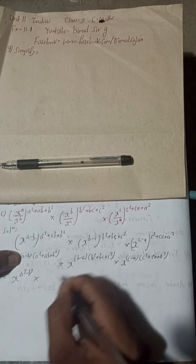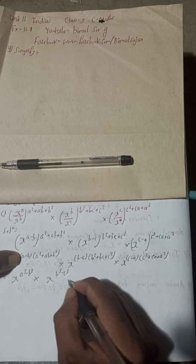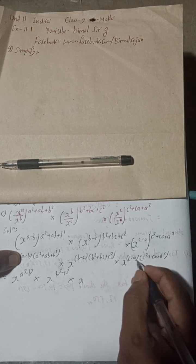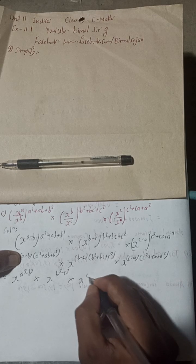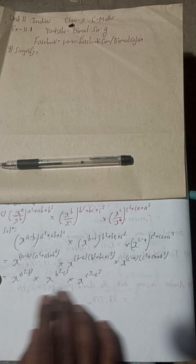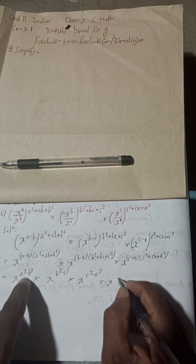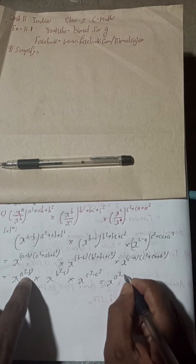Into this is the formula for b³ - c³, into this is the formula for c³ - a³. Now all our x, x, x are in the multiplied form, so you can add the power.